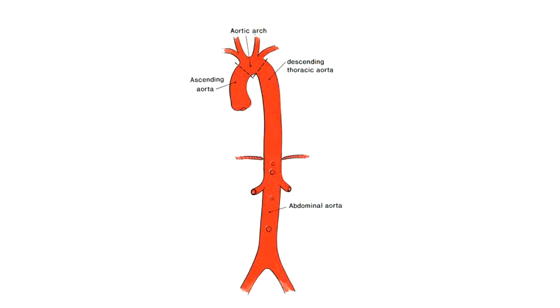The aorta is the large vessel that carries blood from the heart to the entire body. At the simplest level, the aorta can be divided into four parts: the ascending aorta, the aortic arch, the descending thoracic aorta, and the abdominal aorta. The ascending aorta starts at the heart, with the aortic root containing the aortic valve and the origin of the coronary arteries.